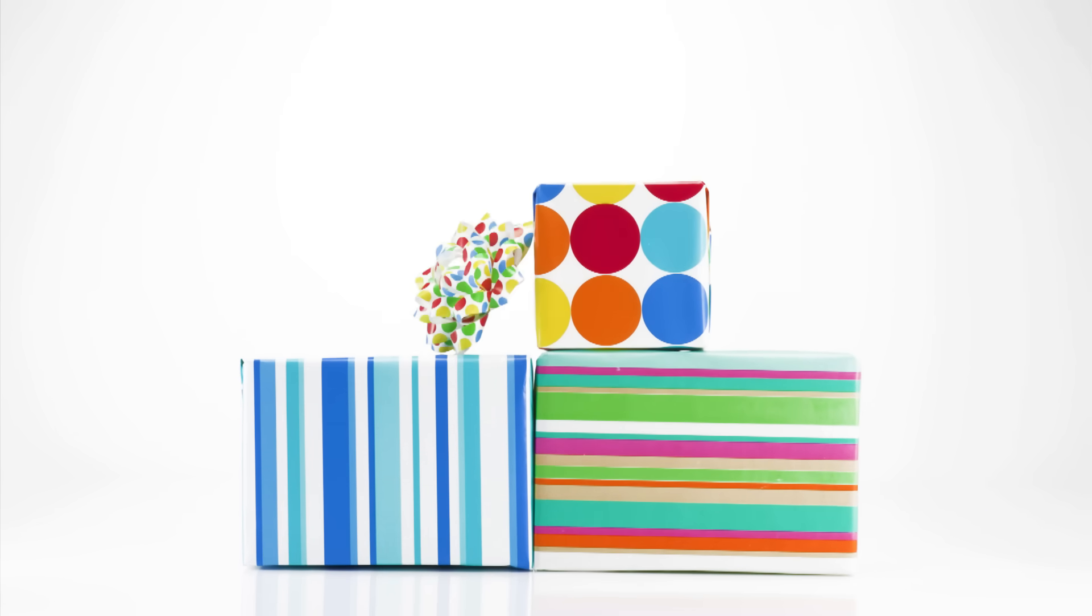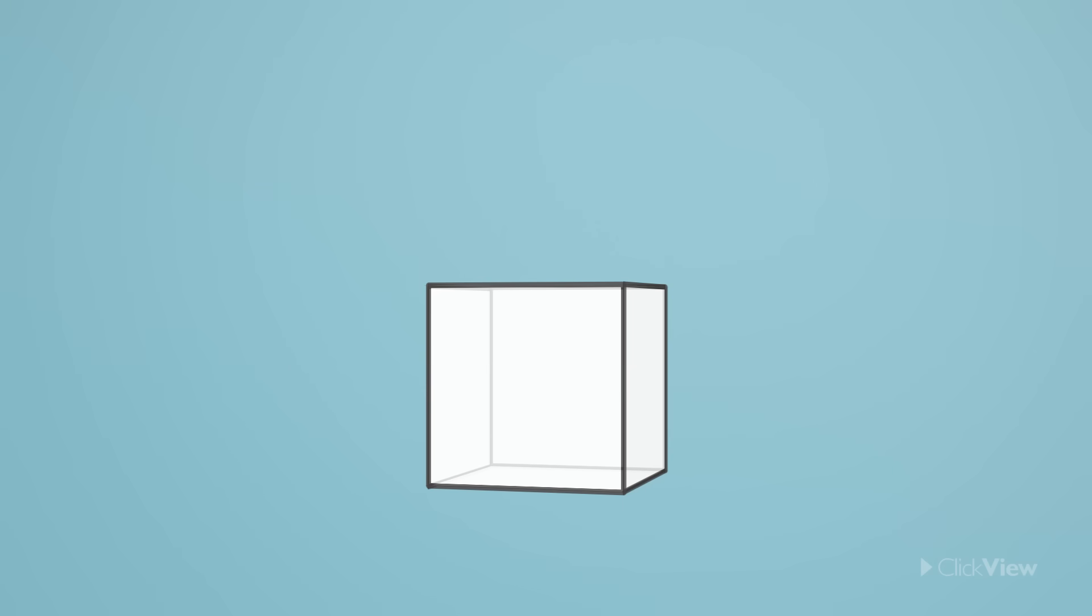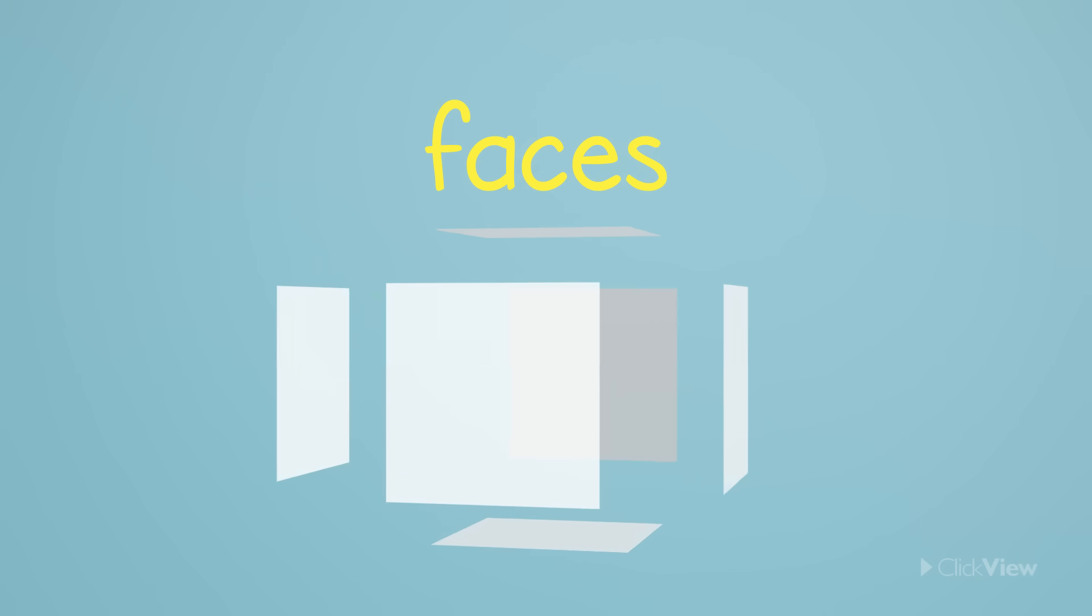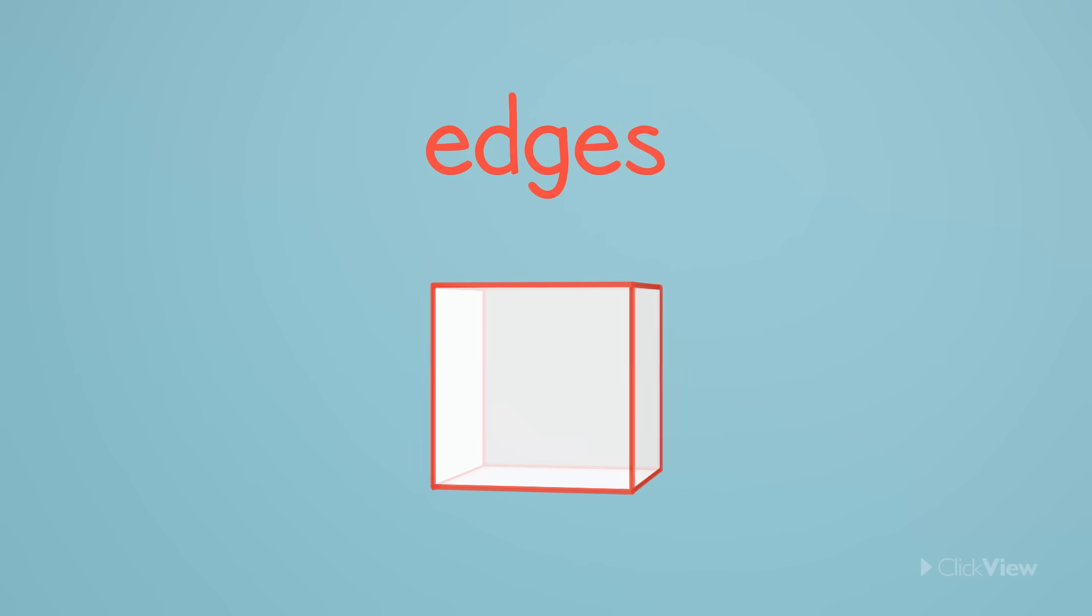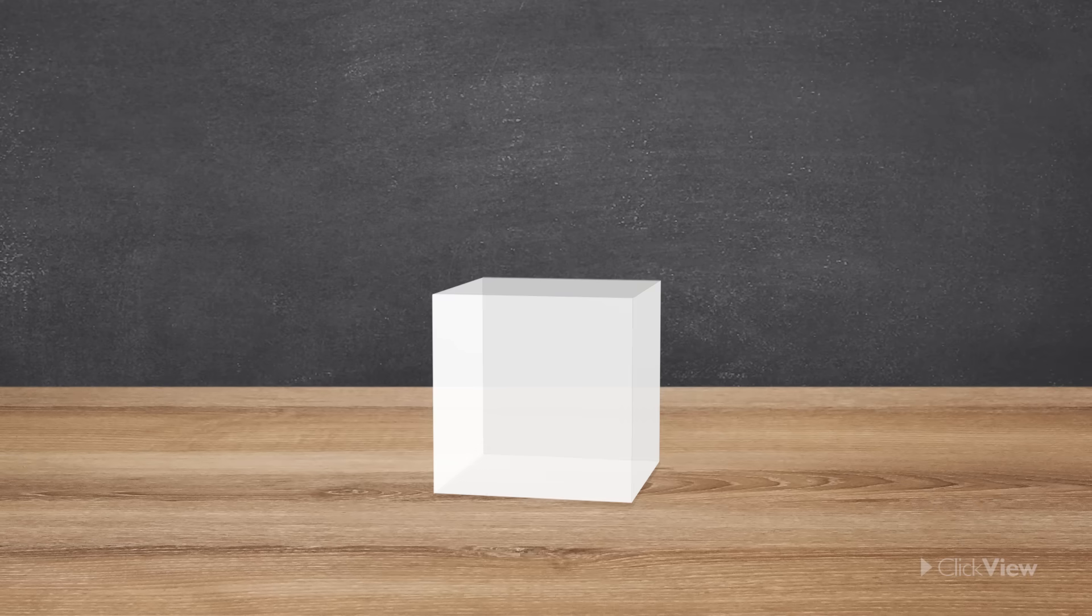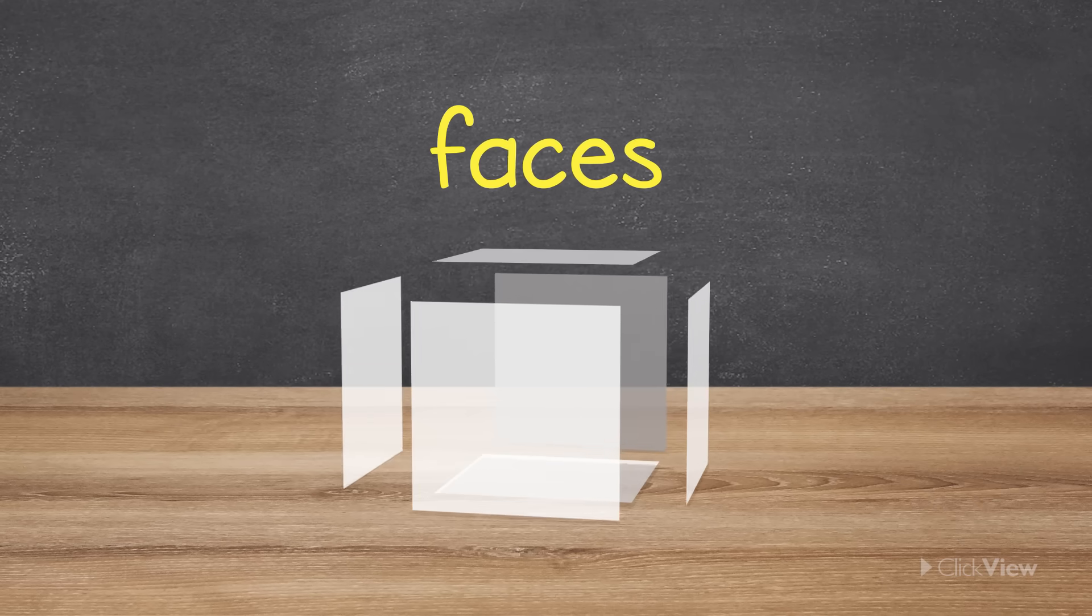There are some features that are common across three-dimensional shapes. These features include faces, edges and corners. The flat surfaces of a shape are called faces.